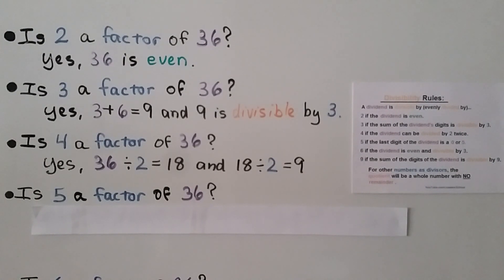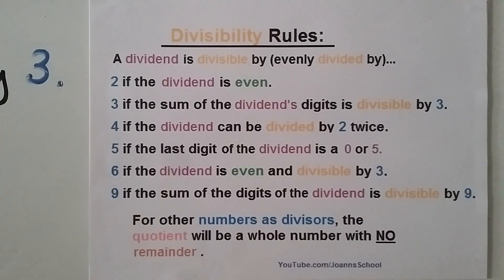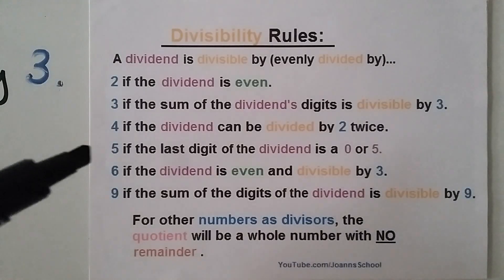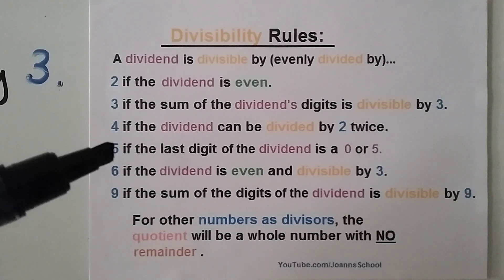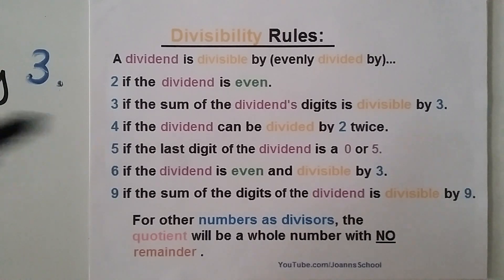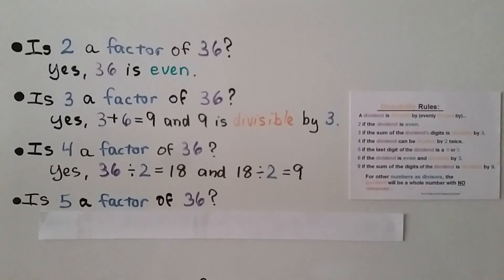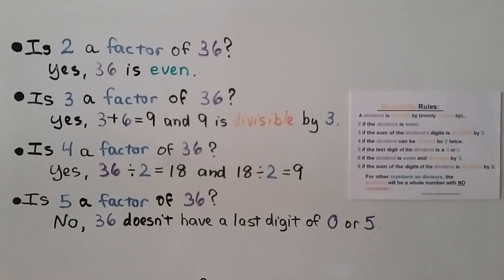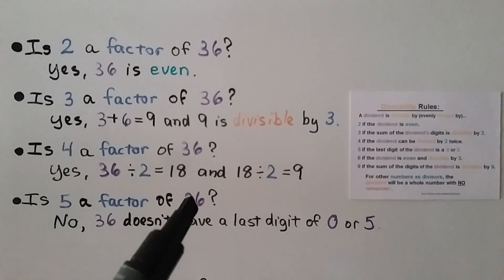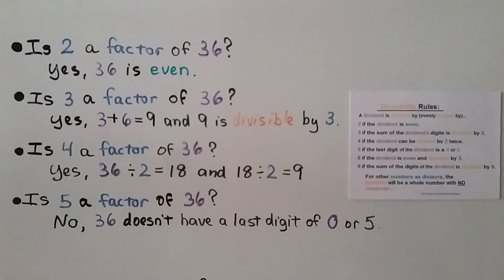Is 5 a factor of 36? The divisibility rule for 5 says the last digit must be a 0 or 5. 36 ends with a 6, so 36 doesn't have a last digit of 0 or 5. Therefore, 5 is not a factor of 36.